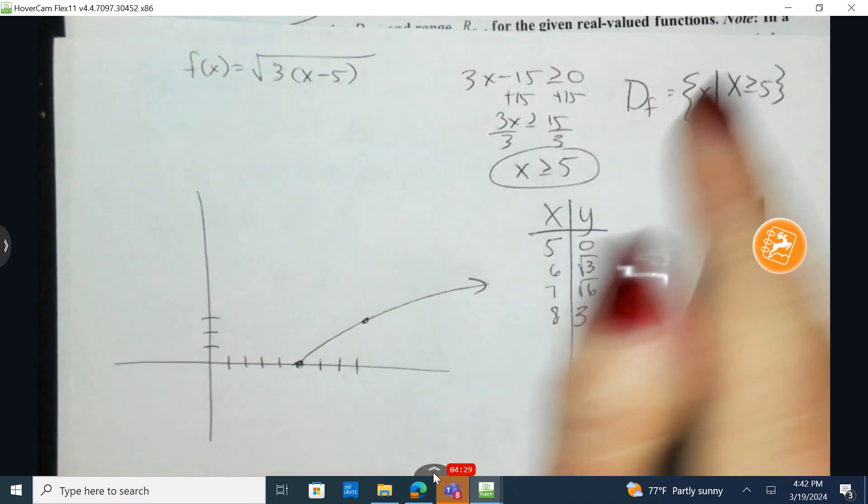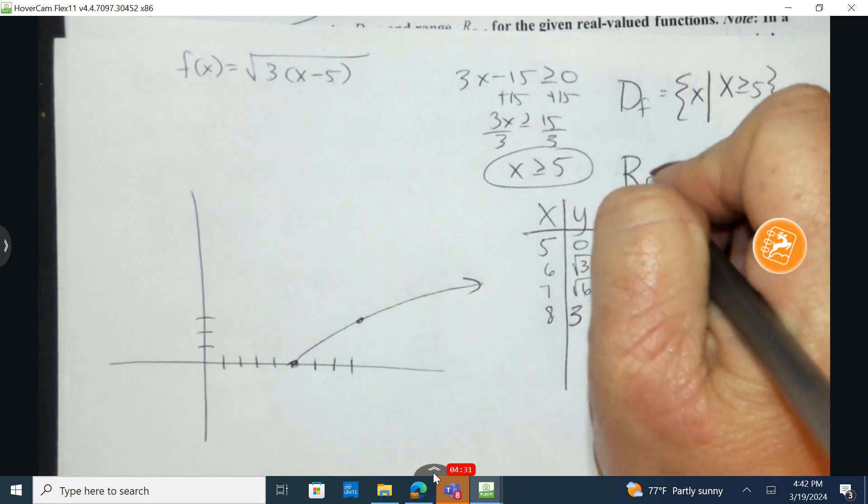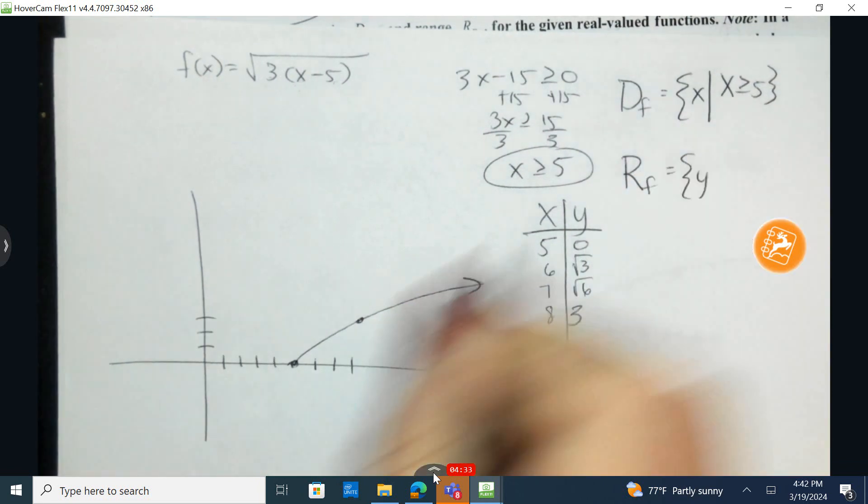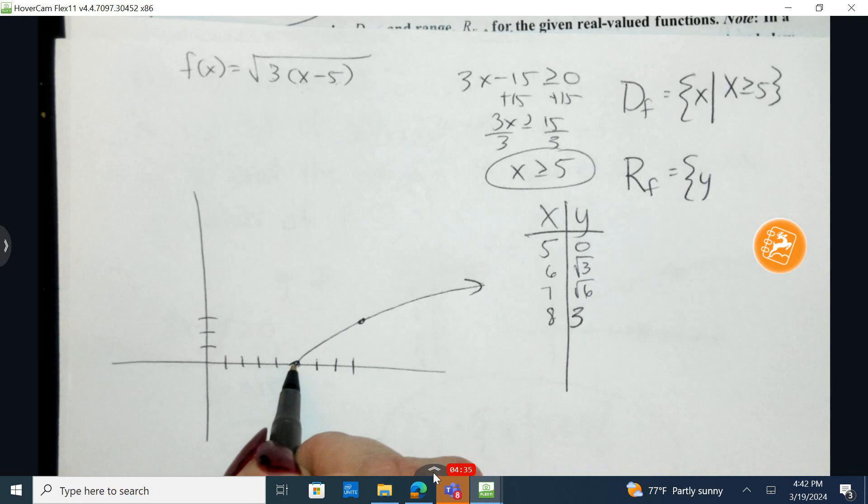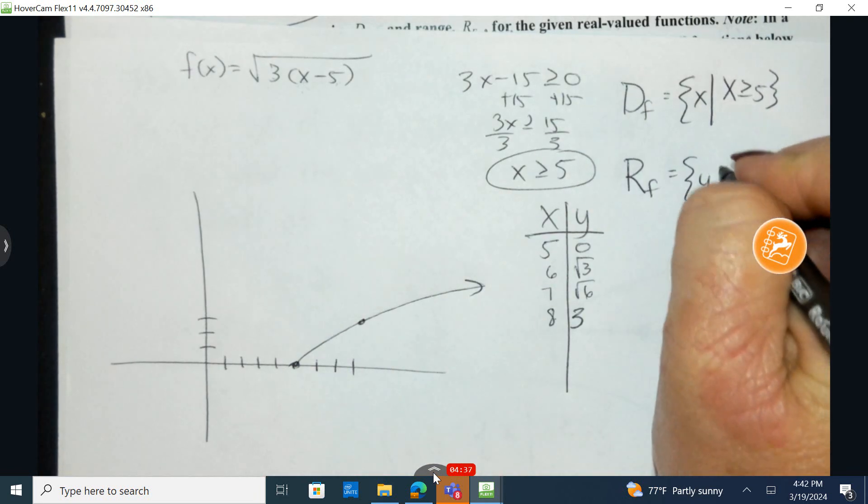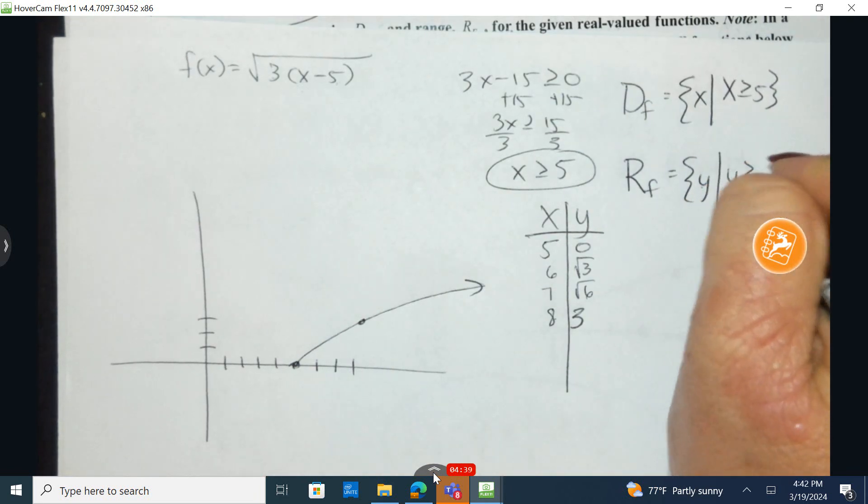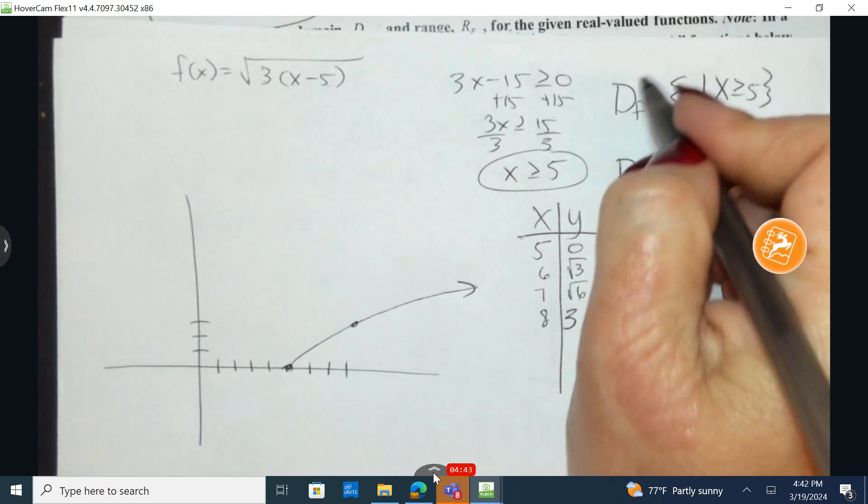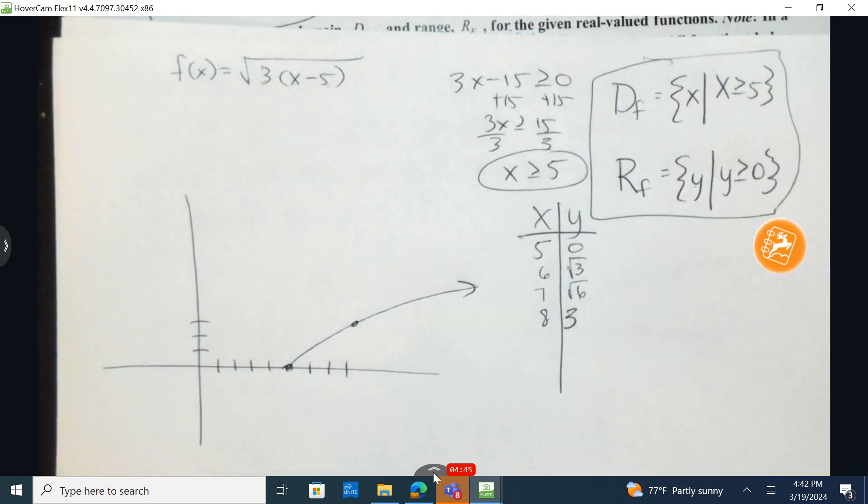So how do I come up with the range? Well, in this particular instance, we can see that the smallest y value again occurs at zero. So all y's such that y is greater than or equal to zero. So I do want you to recognize these.